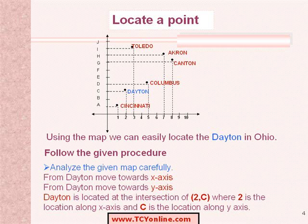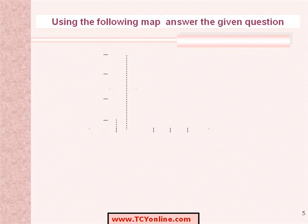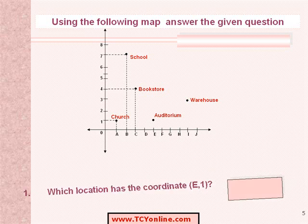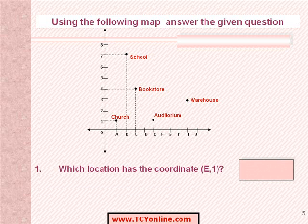Therefore, the location of Dayton can be represented as (2, c). Let us practice a similar question. Using the given map, we need to answer a few questions. We need to find the location which has the coordinate e, 1.